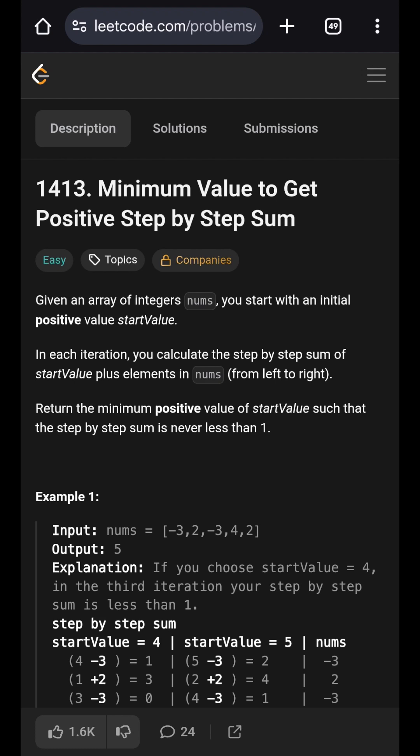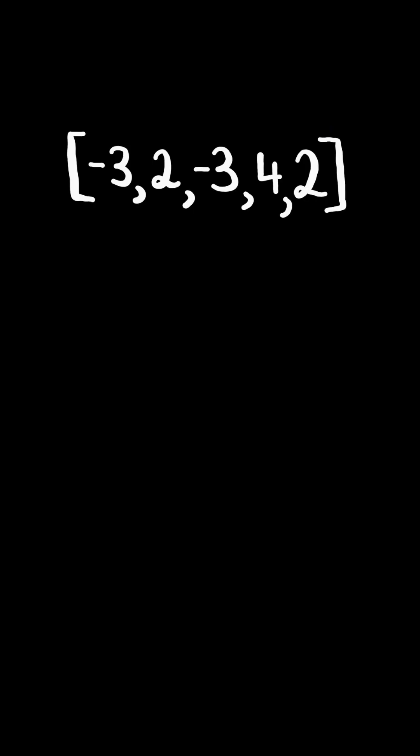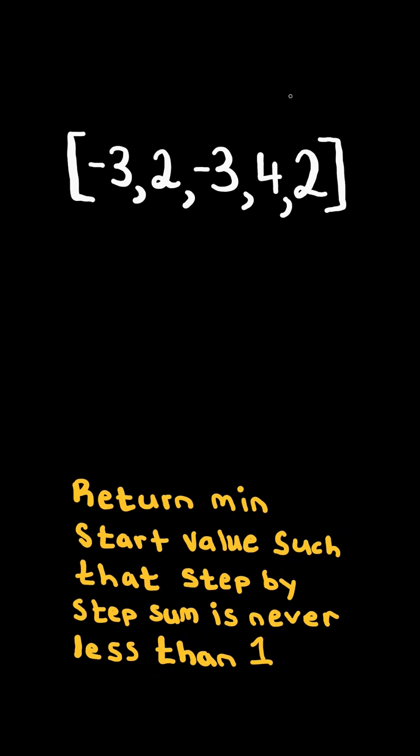Minimum value to get positive step-by-step sum. Given a list of integers, return the minimum possible start value such that the step-by-step sum is never less than 1.